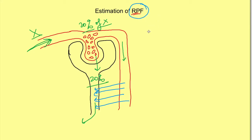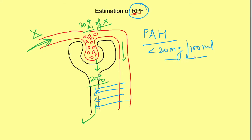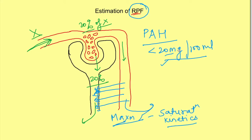The substance used for estimation of renal plasma flow is para-aminohippuric acid (PAH), which is secreted and must be injected. The concentration of PAH in plasma should be less than 20 mg per 100 ml. If more is injected, the concentration will increase above this. The reason is that secretion involves transporters in the tubules, and all transporters have a maximum transport limit. If the concentration is greater than 20 mg per 100 ml, the transporters will not be able to secrete the entire substance into the tubules.